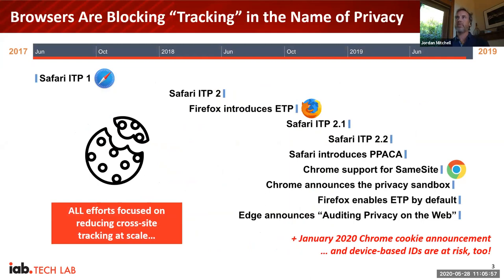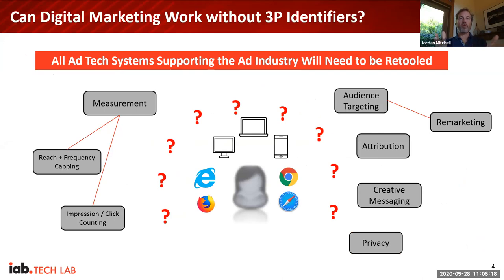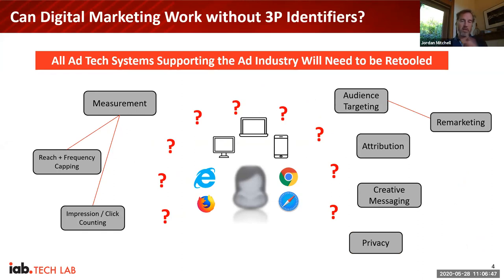Starting a couple of years ago with Safari ITP, and then much more recently at a rapid pace, browsers have been blocking third-party cookies in the name of privacy. All of these efforts are focused on reducing cross-site tracking at scale. This pretty much means that all the ad tech systems bridging first to third party are being blown up, and a lot of software is going to need to be retooled over the next 18 months.